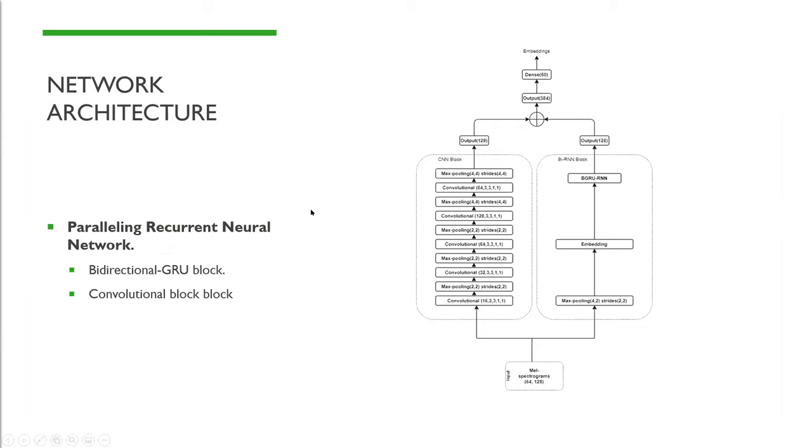The network architecture we chose is a parallel recurrent neural network, or a PRCNN for short. This architecture contains a convolutional block and a bidirectional GRU block, which are trained in parallel. The Mel spectrogram samples from the music audio are fed through both blocks and their respective outputs are concatenated. This network architecture allowed us to utilize the benefits of a convolutional neural network as well as capture the temporal aspects of music audio using the bidirectional GRU.